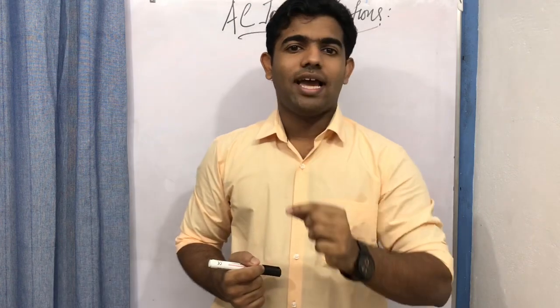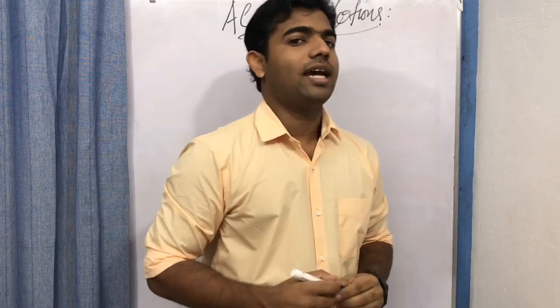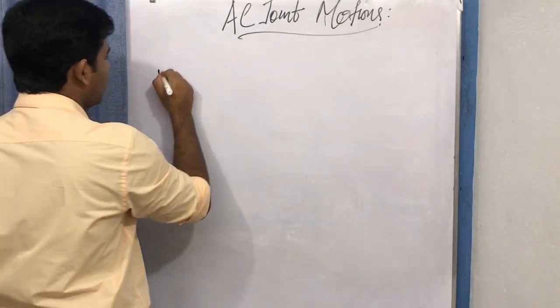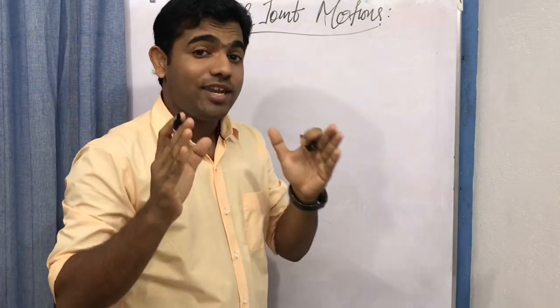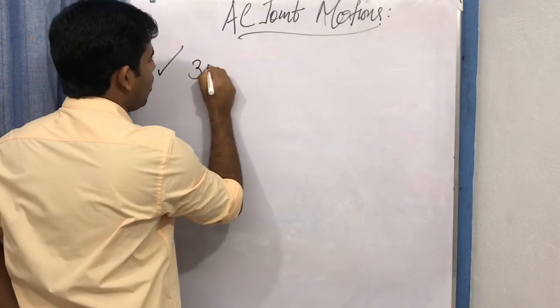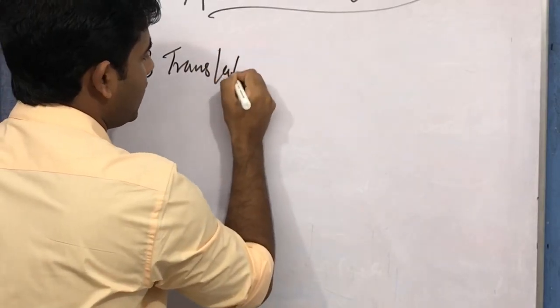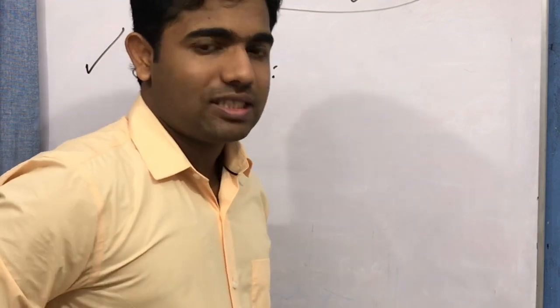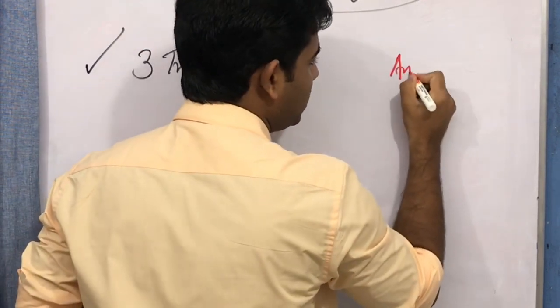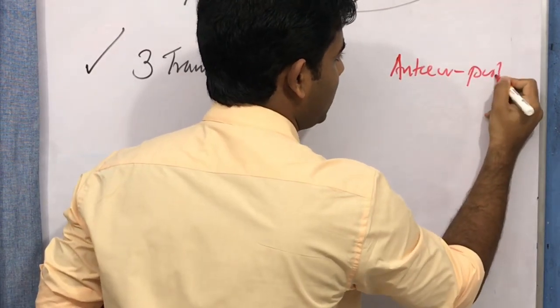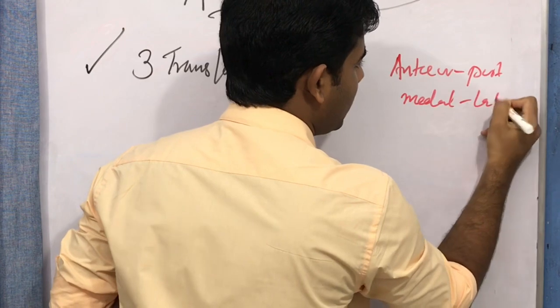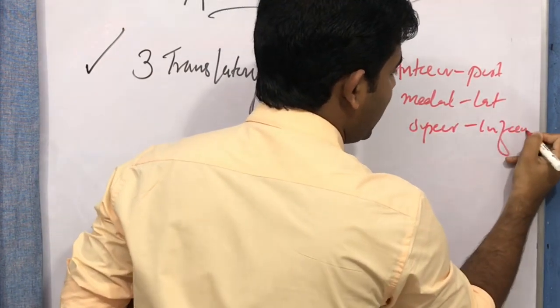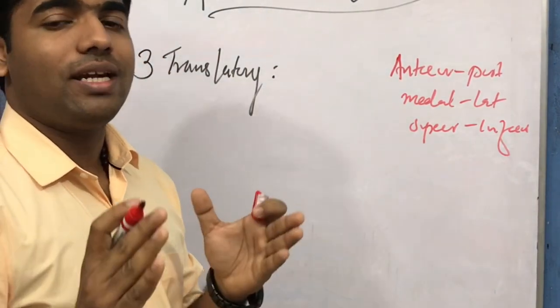Before going further, if anybody is watching this video for the first time, please check the previous video first and then come back. Now, it is a plain synovial joint with three rotatory and three translatory motions. The three translatory motions are the same as in the sternoclavicular joint: anterior-posterior movement, medial-lateral movement, and superior-inferior movement.